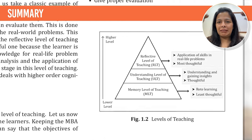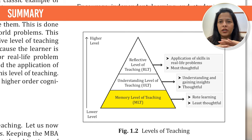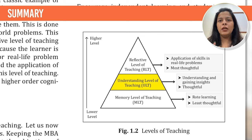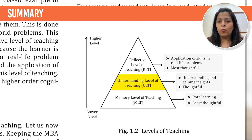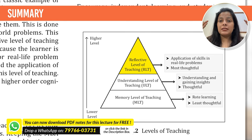Now let us quickly summarize what we have studied today. Learning happens at three levels. At the bottom, we have the memory level of teaching, which happens when kids are very small and in kindergarten - the least thoughtful level, focused on rote learning. Once the student moves past this, he enters the understanding level at school, where the focus is on examples and gaining actual understanding of concepts. Finally, after school you go to college and reach the reflective level, where students use critical thinking and analytical skills to apply existing knowledge to solve real-life problems. This is the most thoughtful level.